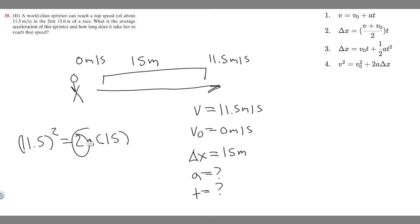I'm going to take this two and multiply by the 15, so 2 times 15 is 30, so it's going to be 30a. If we want to solve for a we can divide both sides by 30. So a equals 11.5 squared divided by 30, and if you plug that in your calculator you should get 4.408.